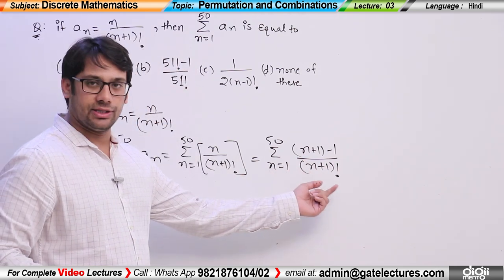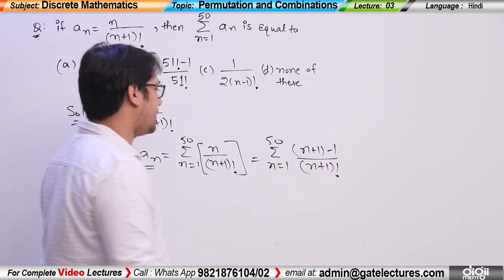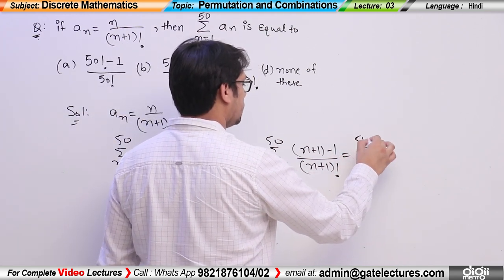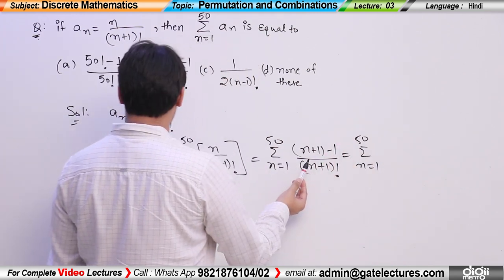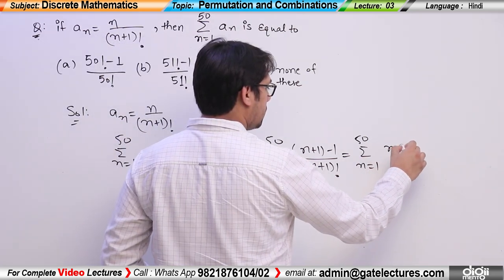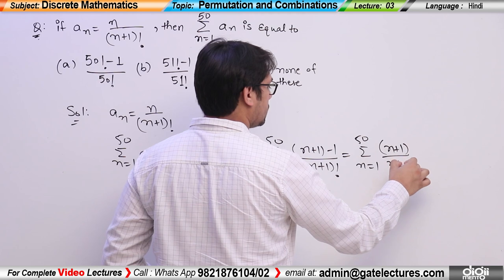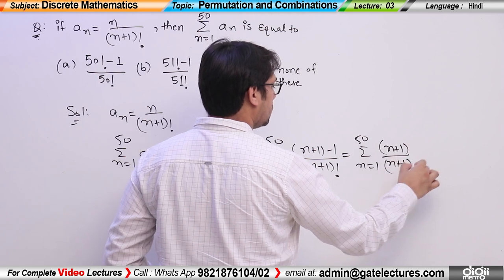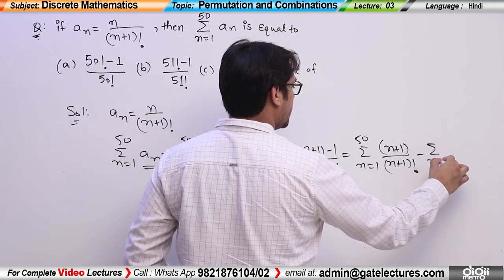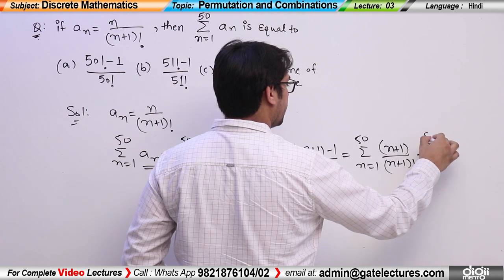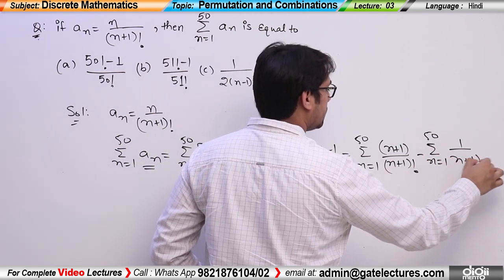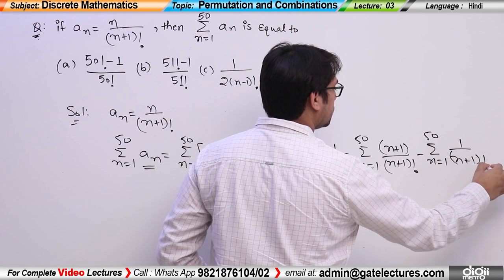Now separate the terms. This becomes: summation from n=1 to 50 of (n+1)/(n+1)! minus summation from n=1 to 50 of 1/(n+1)!. Okay?